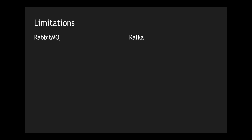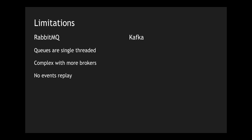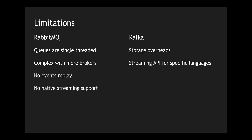Now let's look at limitations. RabbitMQ queues are single-threaded, meaning it can scale only to a point. It has more complex configurations as more brokers are added — with five or more brokers it gets complicated. There is no option to replay a message, which is a big limitation. It also doesn't support streaming right out of the box, though you can use libraries for streaming capabilities. Kafka has storage overheads because it stores messages for long periods and replicates to three replicas for durability, so storage cost must be considered.